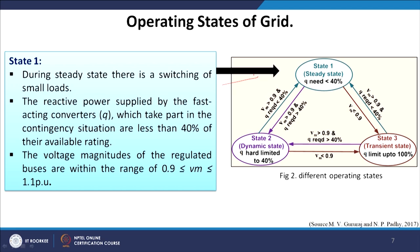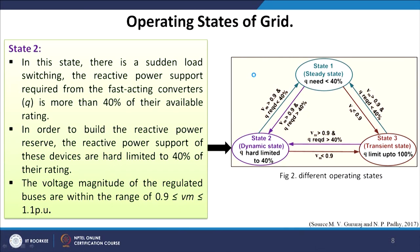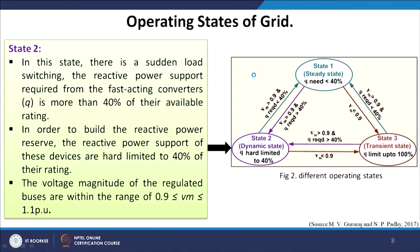During steady state, the voltage magnitude of the regulated buses is within 0.9 to 1.1 per unit. Moving to the dynamic state, any sudden load changes fall under this stage. The reactive power support required from the fast-acting converters is more than 40 percent of their available capacity. In order to build the reactive power reserve, the reactive power support of these devices is hard-limited to 40 percent.